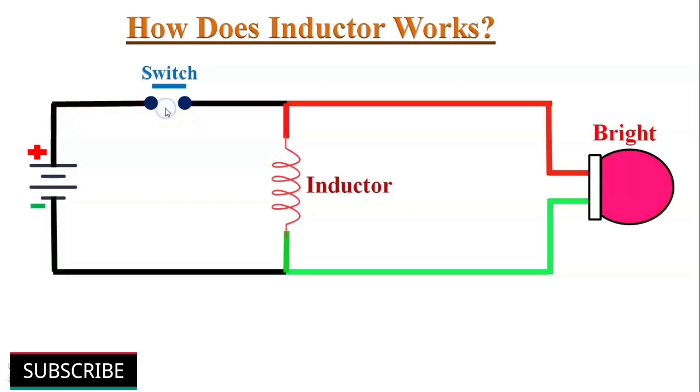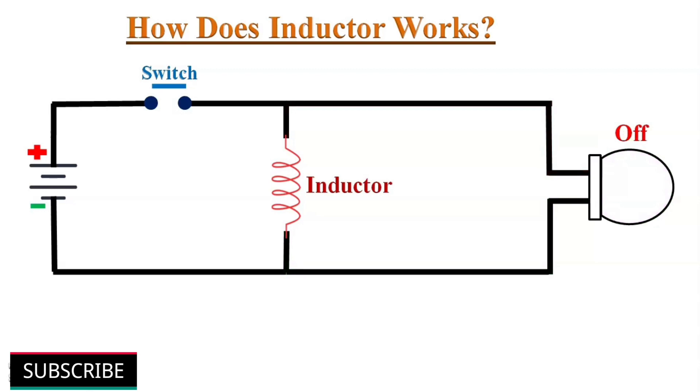When you power off this circuit, first the bulb burns very brightly and then quickly goes out. The reason for this strange behavior is the inductor. Let me explain why this circuit behaves like this.